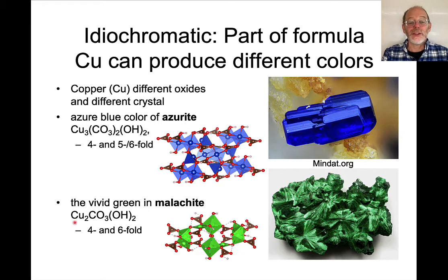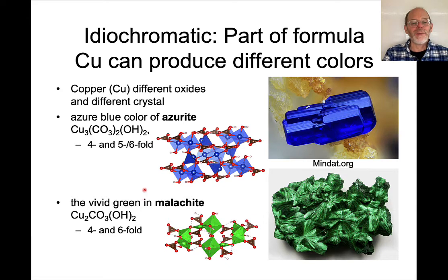Malachite, also copper, is also idiochromatic. The copper exists in four-fold coordination — these little plates — and six-fold octahedral coordination, and that's what gives rise to the green color. So even though both azurite and malachite have copper, they have different coordinations, different structures, and consequently different colors.